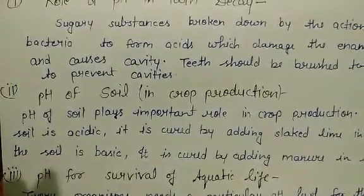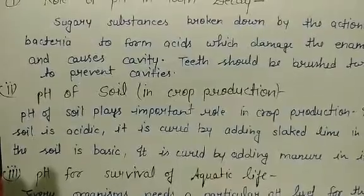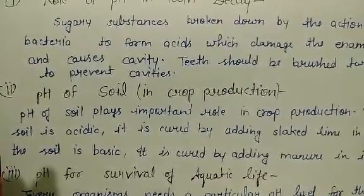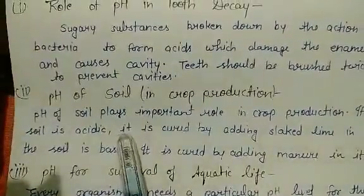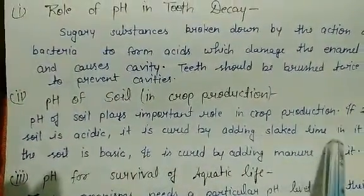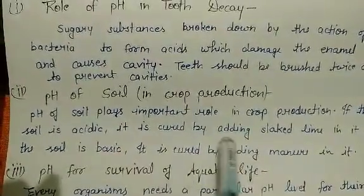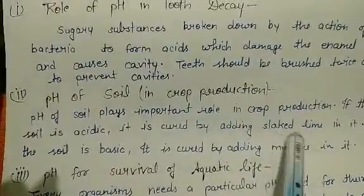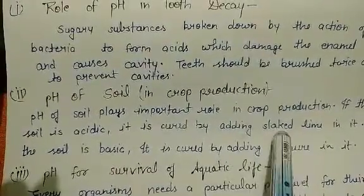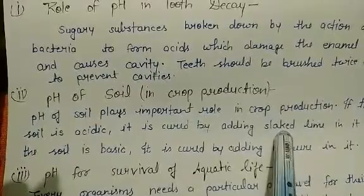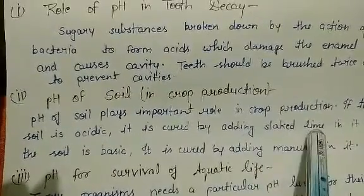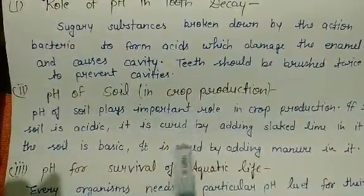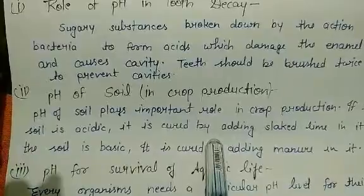When the pH of the soil gets reduced due to acidity, the best remedy is to add slaked lime to the field. Slaked lime, also known as calcium hydroxide with the formula Ca(OH)₂, neutralizes the acid formed in the soil and balances the pH.